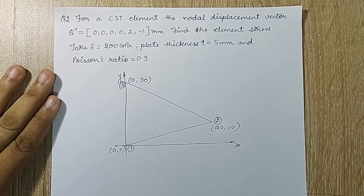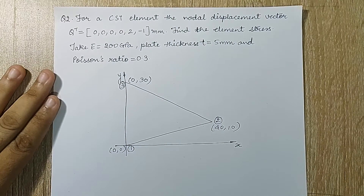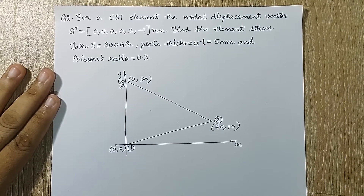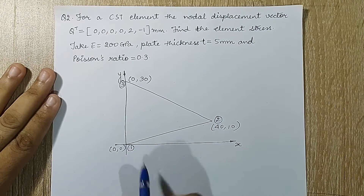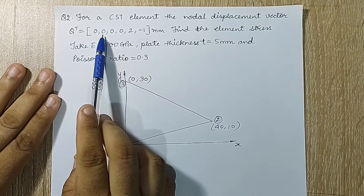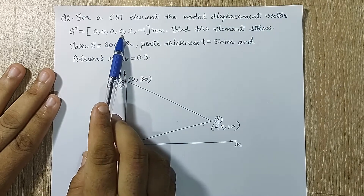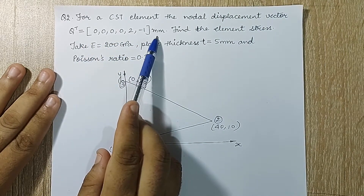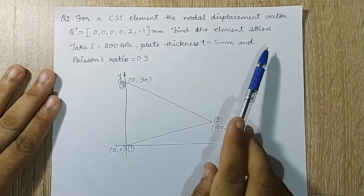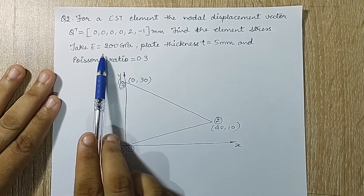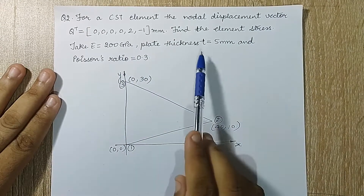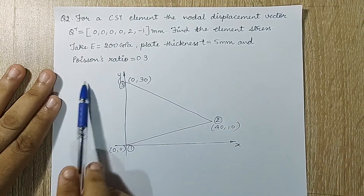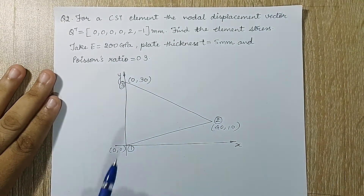Hello everyone, welcome to the next session of finite element analysis. In this session I am solving another numerical of CST element. For a CST element, the nodal displacement vector q is given as 0, 0, 0, 0, 2, minus 1 — all values in mm. Find the element stress. Take E as 200 gigapascal, plate thickness t as 5 mm, and Poisson's ratio as 0.3.